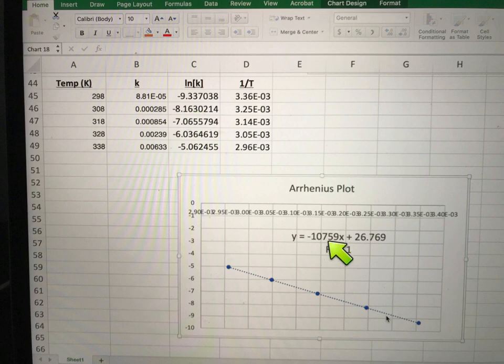Then your slope is equal to negative Ea over R and your y-intercept is equal to the natural log of the exponential frequency factor.